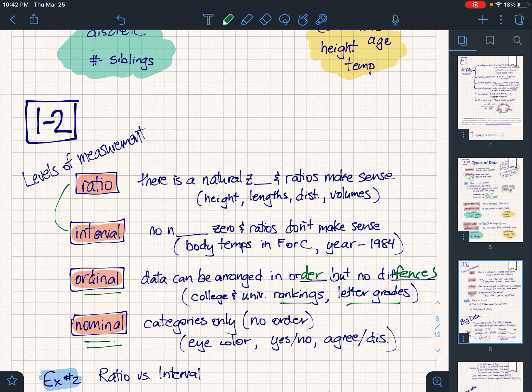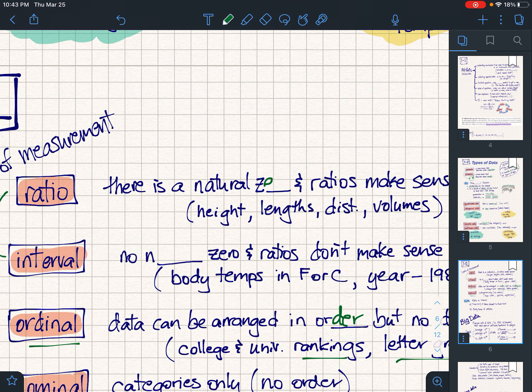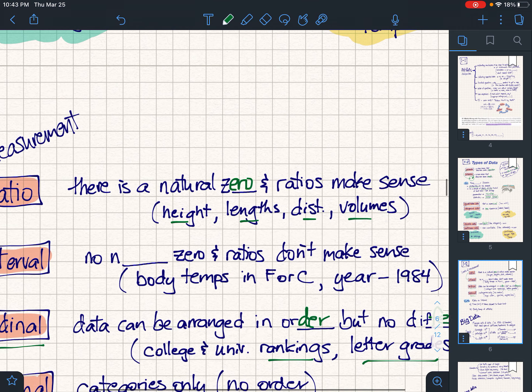The greatest challenge you'll find I think is between these two things: a ratio and an interval. Both of these are numerical, and notice they measure things—heights, lengths, distance, volumes, body temp. These are all kind of continuous types of numbers, but some of these numbers have what we would call a natural zero, a starting spot. Height, length—you could talk about zeros there.